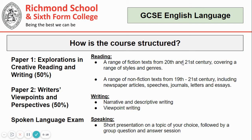So how is the course structured? Well, first of all, English Language and English Literature are separate GCSEs, so at the end of Year 11 you'll have two GCSE qualifications in English.